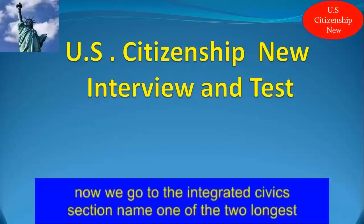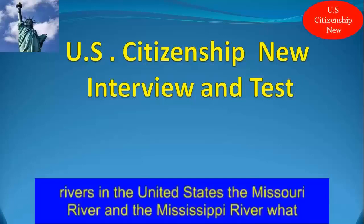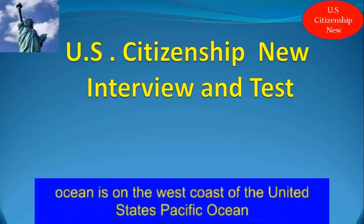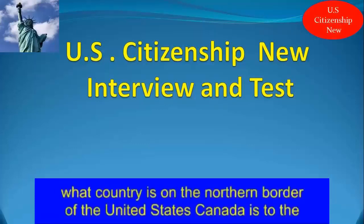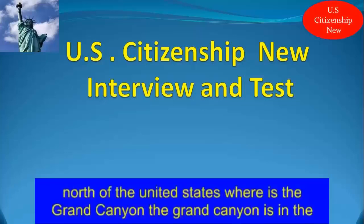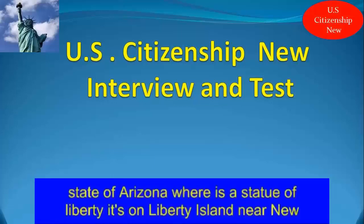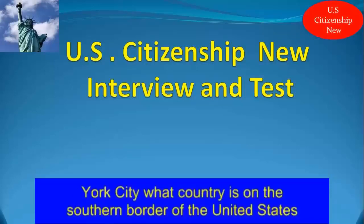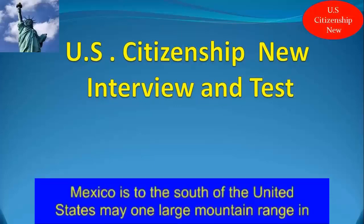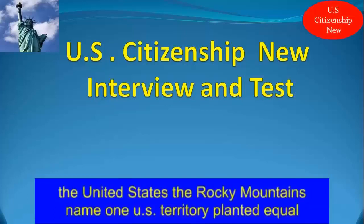Now we go to the Integrated Civics section. Name one of the two longest rivers in the United States. The Missouri River and the Mississippi River. What ocean is on the west coast of the United States? The Pacific Ocean. What country is on the northern border of the United States? Canada. Where is the Grand Canyon? The Grand Canyon is in the state of Arizona. Where is the Statue of Liberty? It's on Liberty Island near New York City. What country is on the southern border of the United States? Mexico. Name one large mountain range in the United States. The Rocky Mountains.